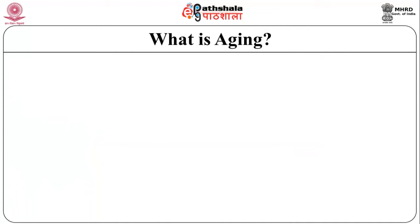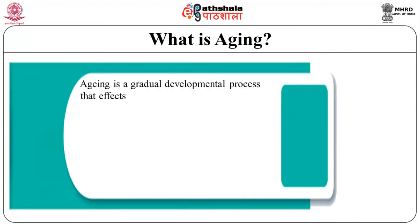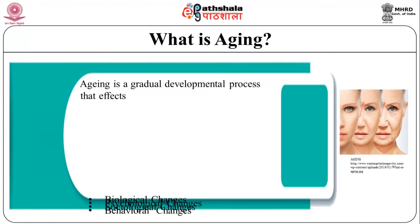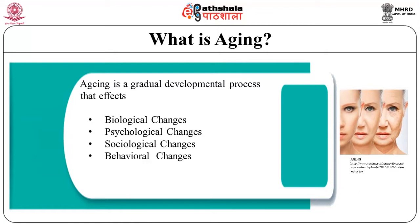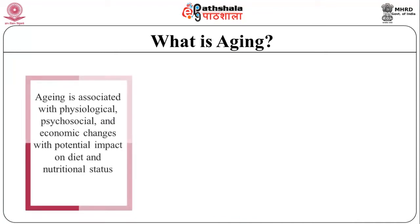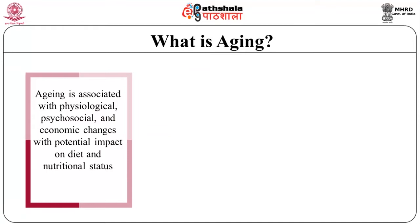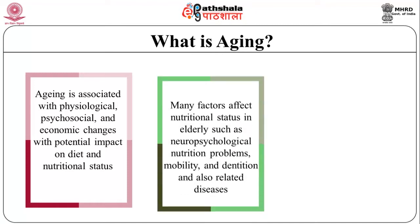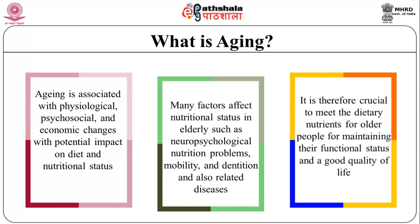Aging is a gradual developmental process that affects biological, psychological, sociological, and behavioral changes, which begins at the moment an individual is born. Aging is associated with physiological, psychosocial, and economic changes with potential impact on diet and nutritional status. Many factors affect the nutritional status in elderly, such as neuropsychological issues, nutritional problems, mobility, dentition, and related diseases. It is therefore crucial to meet the dietary nutrients for elderly people to maintain their functional status and good quality of life.